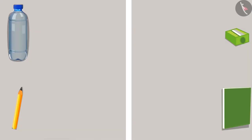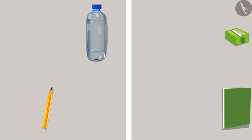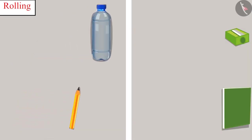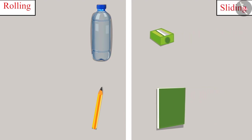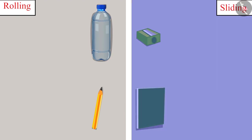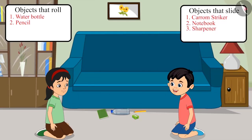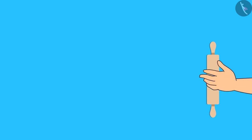All the surfaces of the objects which are circular — they are rolling. And the objects whose surfaces are not circular — they are sliding. Yes Pinky! So children, can you tell me whether this rolling pin will slide or roll?